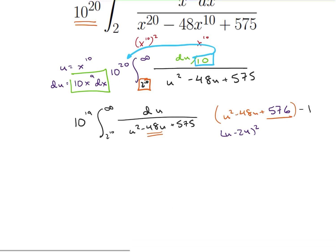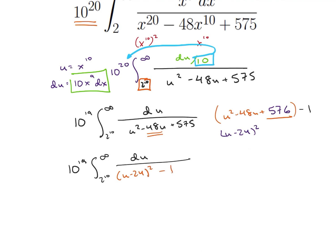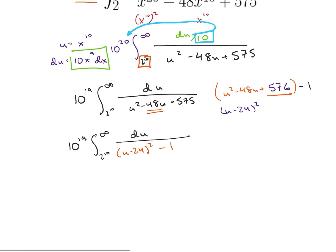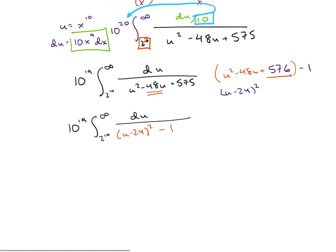So we can rewrite our integral as 10 to the 19th, integral from 2 to the 10th to infinity, of du over u minus 24 squared minus 1. Before doing the next substitution, let's note that 2 to the 10th is 2, 4, 8, 16, 32 squared — that's 1024.